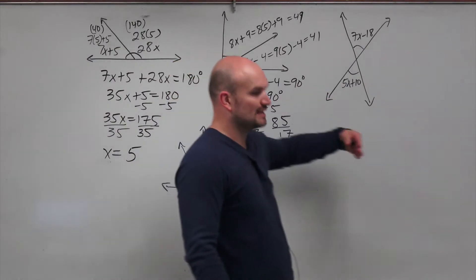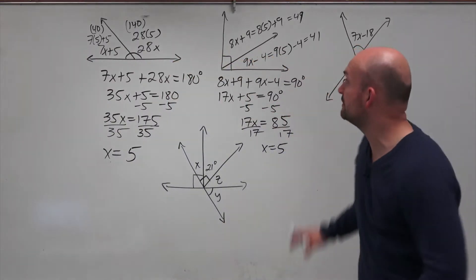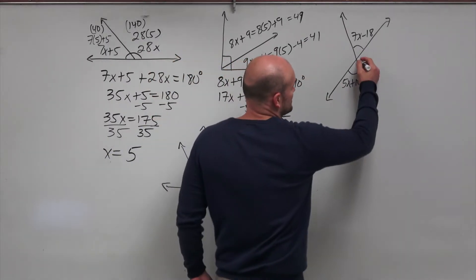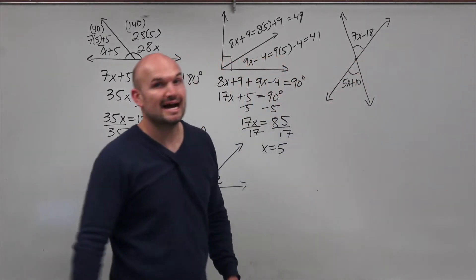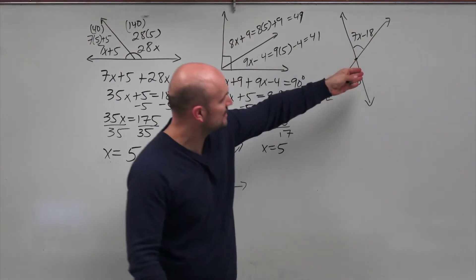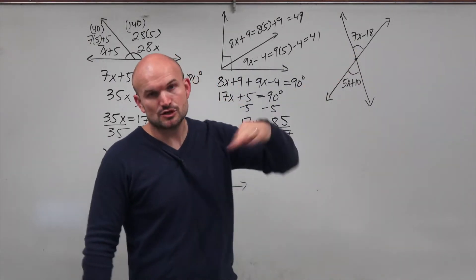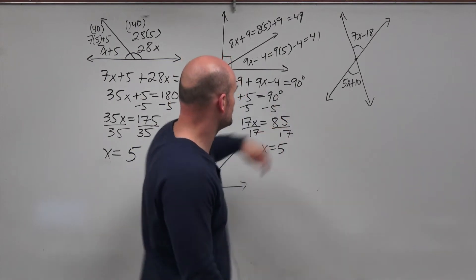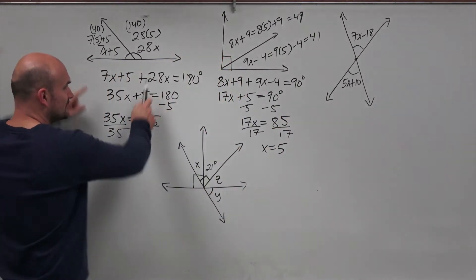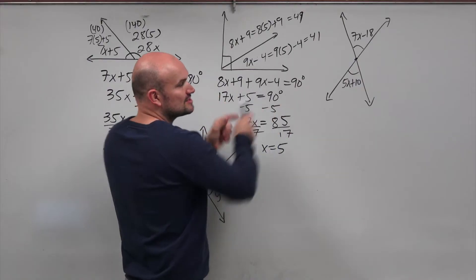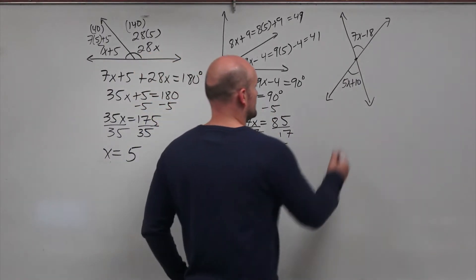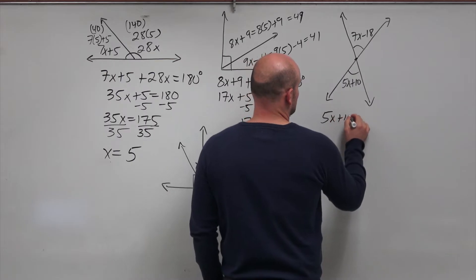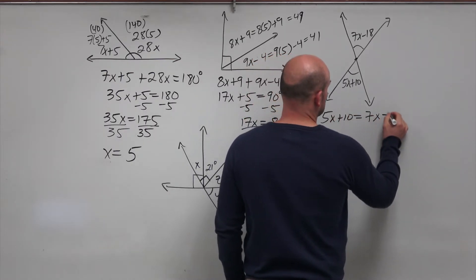The last angle relationship we're going to investigate is vertical angles. Vertical angles are two angles that share a common vertex but do not share a common side. Vertical angles are created when you have intersecting lines. Unlike supplementary and complementary angles, vertical angles are equal to one another. So the equation I'll write is 5x + 10 = 7x - 18.